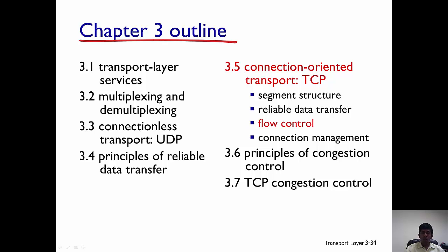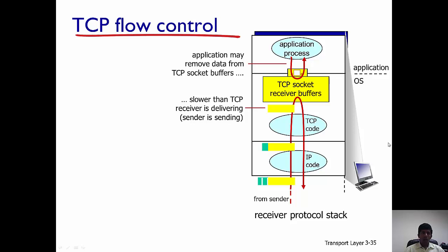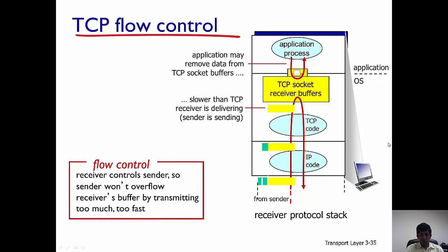In this video we'll be talking about TCP's flow control and connection management. Flow control ensures that the TCP sender does not overwhelm the TCP receiver. In other words, the TCP receiver controls the sender so that the sender won't overflow the receiver's buffer by transmitting too much data too fast.